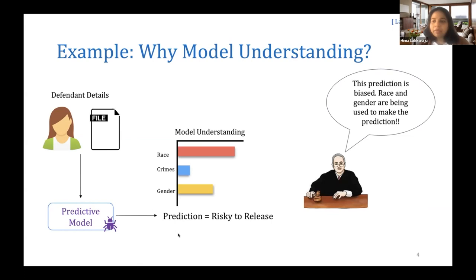But if we provide them a deeper understanding, for example the top three features that are driving this prediction, then they'll be able to figure out if and how much to rely on such a prediction. In this case, the top three features are turning out to be race, gender, and past crimes.